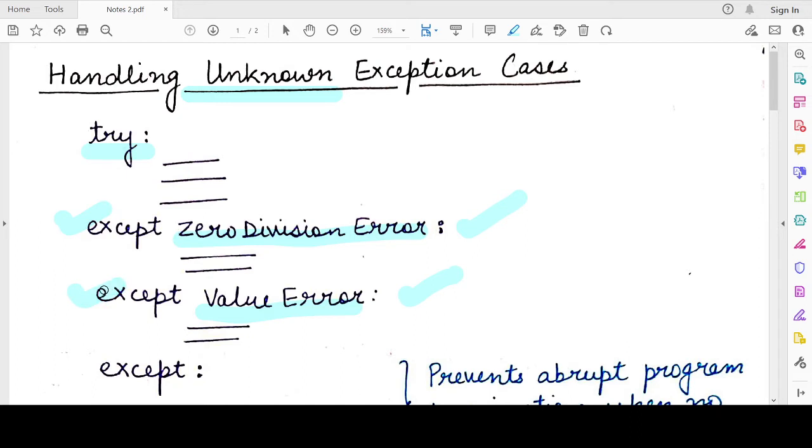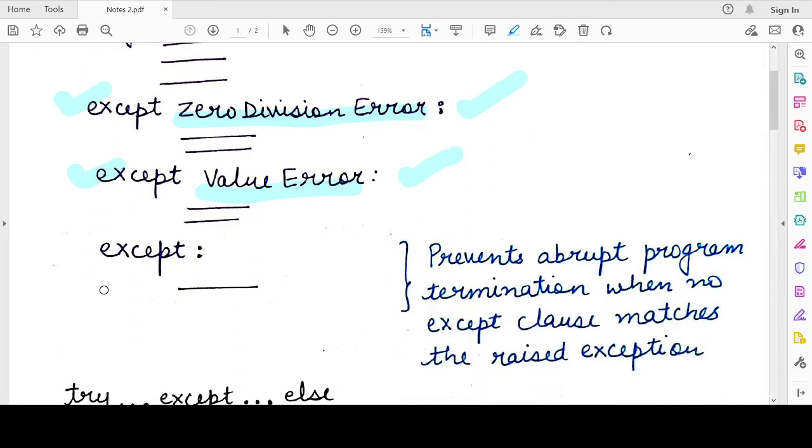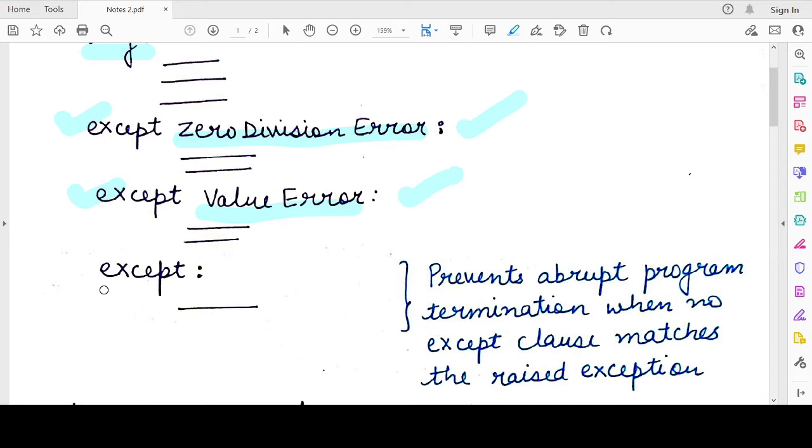So to handle such cases when you also want to specify some exception handling code for those exceptions, apart from the ones already specified, you write a precautionary except clause and you do not specify any exception name in front of it.